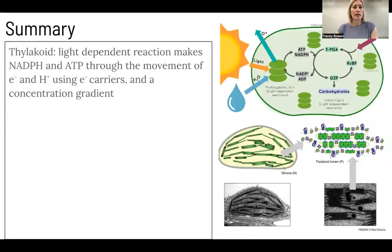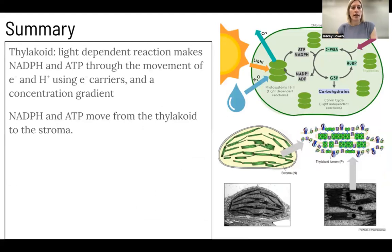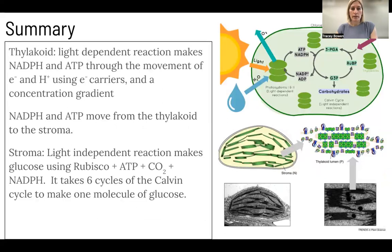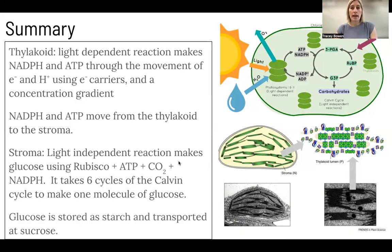To summarize: the thylakoid is where the light dependent reactions are making NADPH and ATP through the movement of electrons and hydrogen ions using electron carriers and a hydrogen ion concentration gradient. NADPH and ATP move from the thylakoid to the stroma. The stroma is where the light independent reactions happen, making glucose using the enzyme RuBisCO, ATP, NADPH, and carbon dioxide — and it takes six cycles of the Calvin cycle to make one glucose molecule. Melvin Calvin is who the Calvin cycle is named after; he won the 1961 Nobel Prize for his research. Finally, glucose made in the chloroplasts will be stored as starch potentially before being transported as sucrose, and electron micrographs of chloroplasts can illustrate these structures.